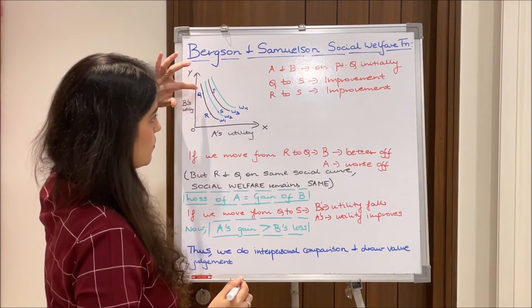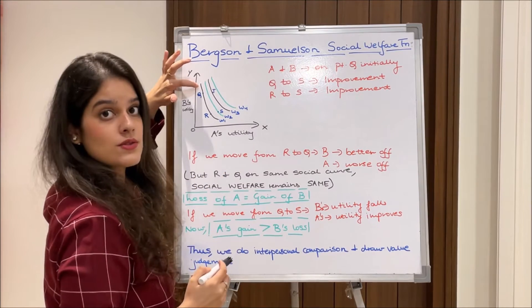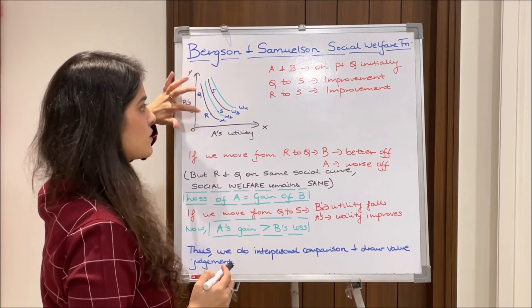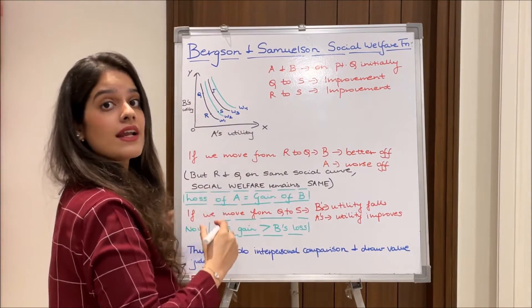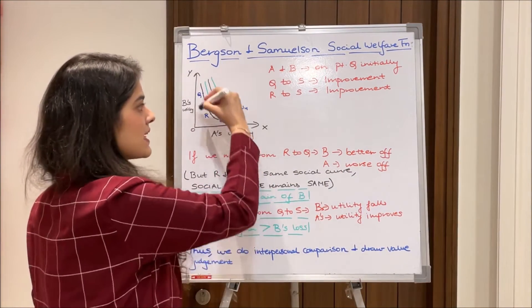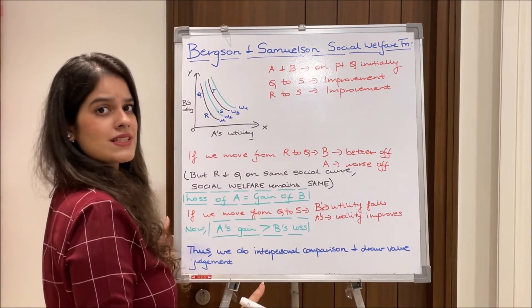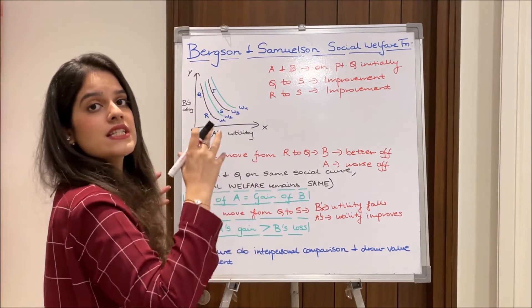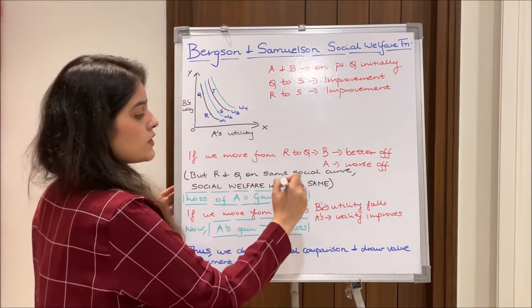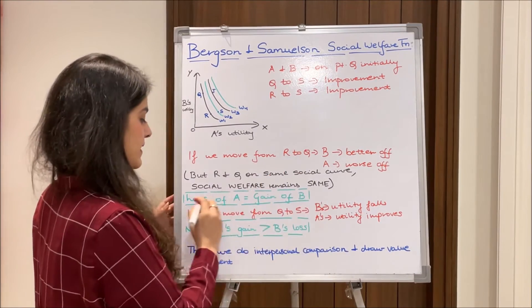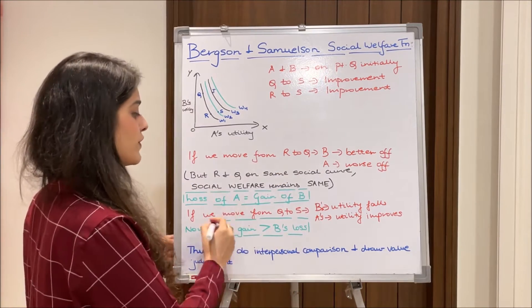Now, if we move from R to Q: R is one point, and moving to Q, we can clearly see that B's utility will be higher whereas A's utility has fallen — A is worse off. But because R and Q are both on the same welfare curve W1, social welfare remains the same. All points on this curve give the same level of satisfaction. The loss of A is compensated by the gain of B.